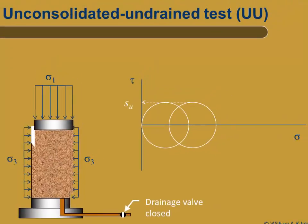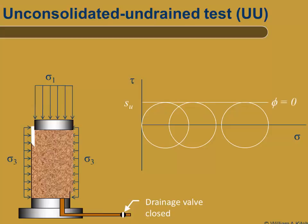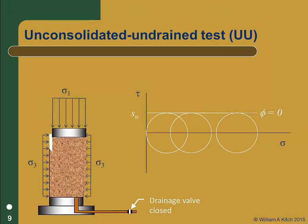Similarly, if we conduct another test on an identical specimen but raise sigma3 during the consolidation, the soil still would not gain any strength because no consolidation is allowed. This third test would also have the same undrained strength as the previous tests. If we plot the total stress failure envelope, it will have zero slope and intersect the tau axis at SU. This is known as the phi equals zero condition. Saturated clays loaded in undrained conditions fail under phi equals zero conditions.